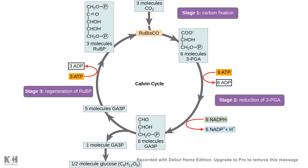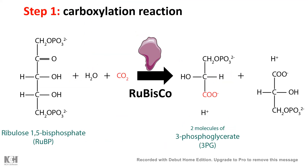We completely understand that rubisco, or ribulose bisphosphate carboxylase, is a key enzyme of the Calvin cycle. In this video, we are going to talk about the mode of action of rubisco enzyme and how it can work in different situations — and depending upon the differences in oxygen and carbon dioxide concentration, how rubisco can function in two different regimes.